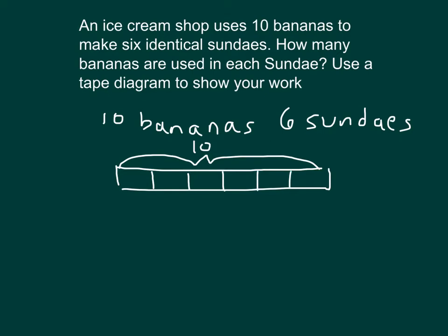And what I am looking for and trying to figure out is how many bananas are within each sundae. Six of those units, one, two, three, four, five, six, do equal ten. And then so one unit is equal to ten divided by six.